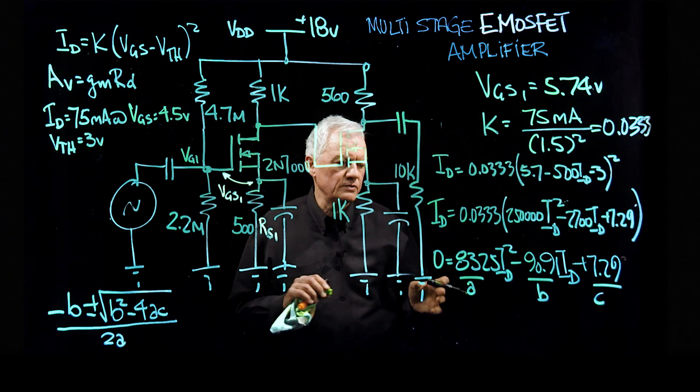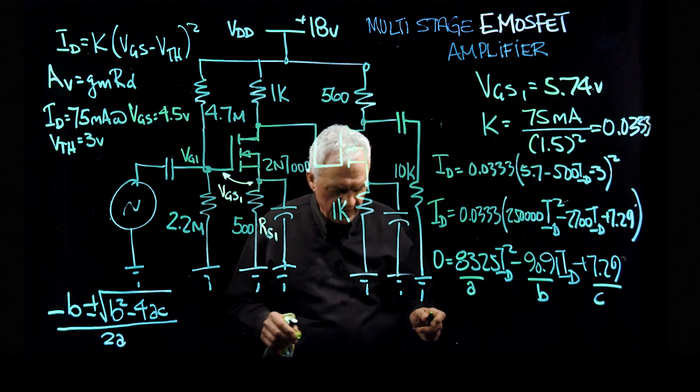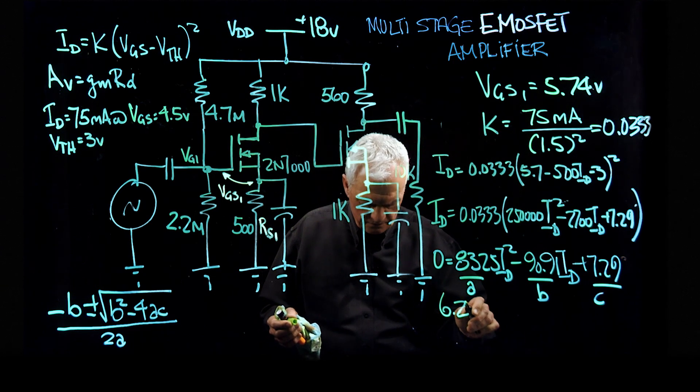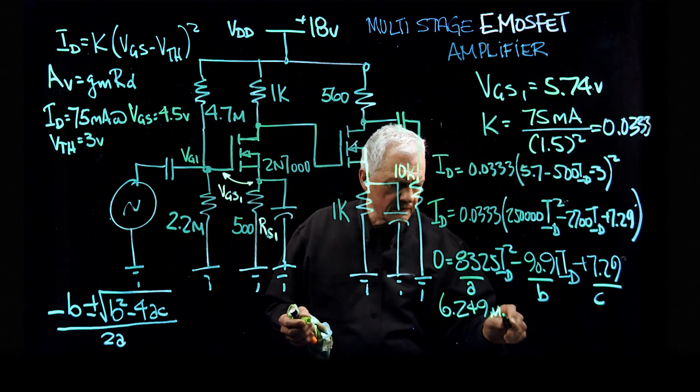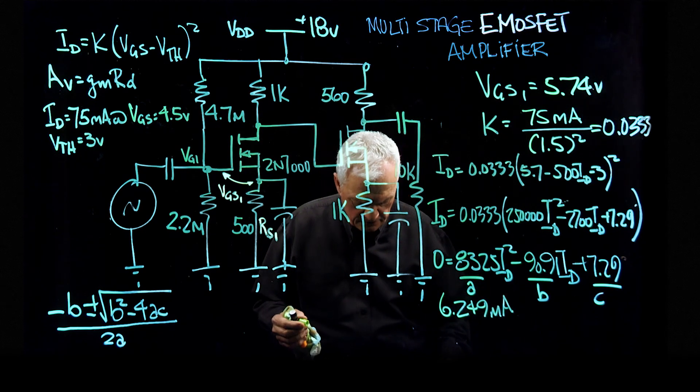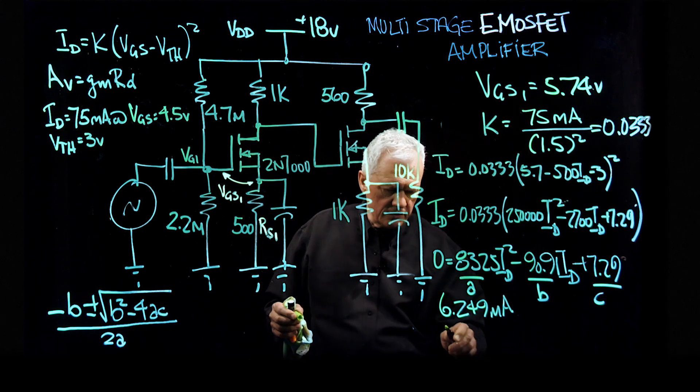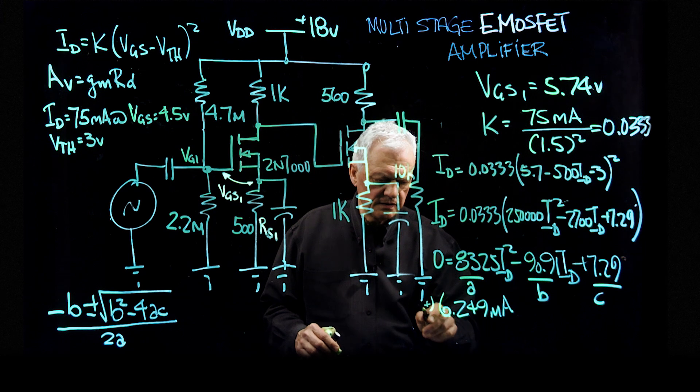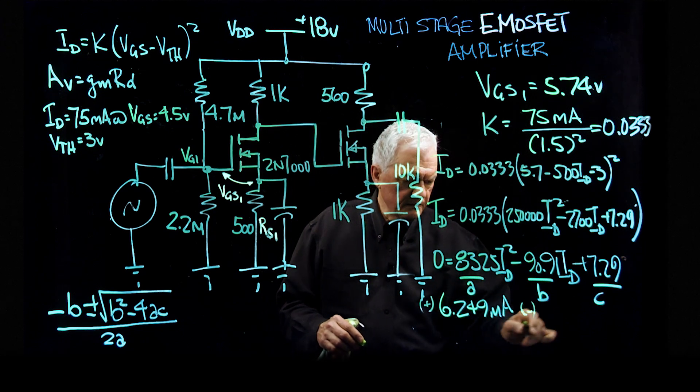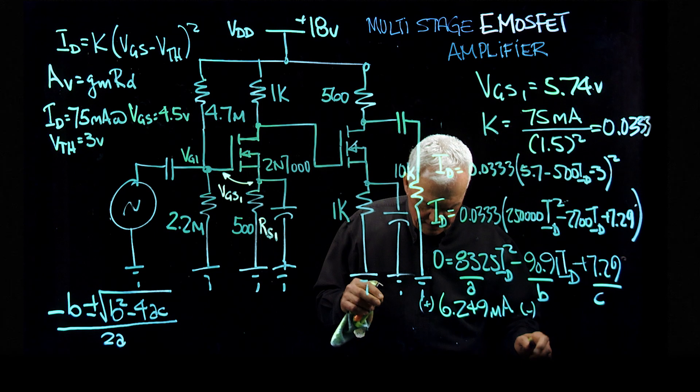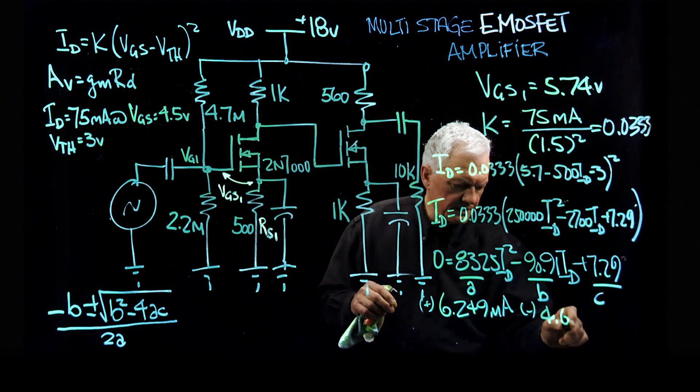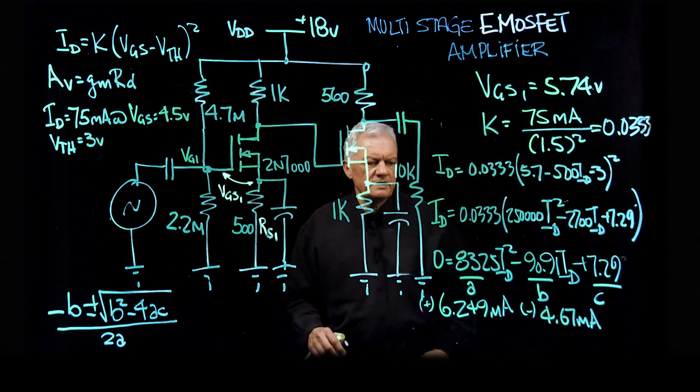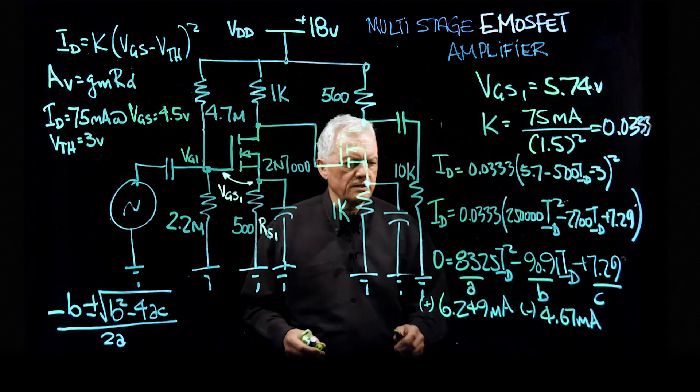Now the thing is, you are going to get two numbers. When you do it one way, and you can do the math, you are going to get something like 6.249 milliamps. And then you do it the other way, so one is plus, and when you do it the minus, you are going to have a different number. You are going to have on the order of 4.67 milliamps. So you are going to have two numbers. Which one is the correct ID?